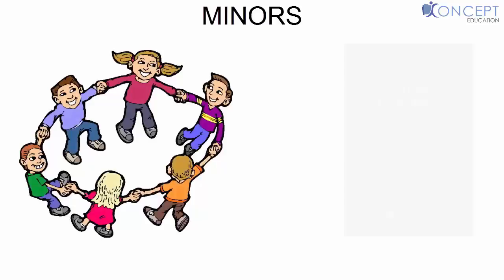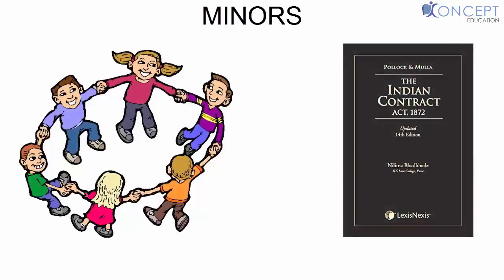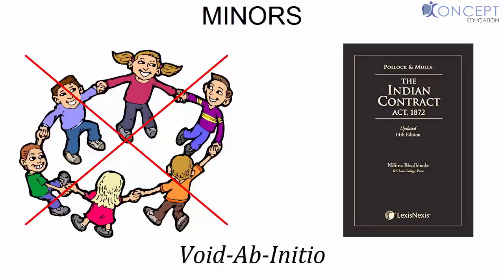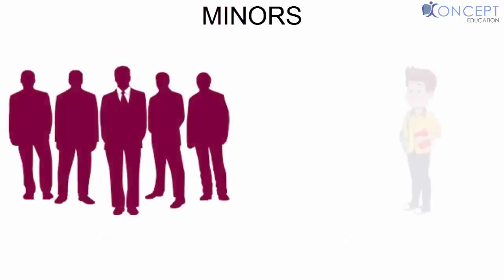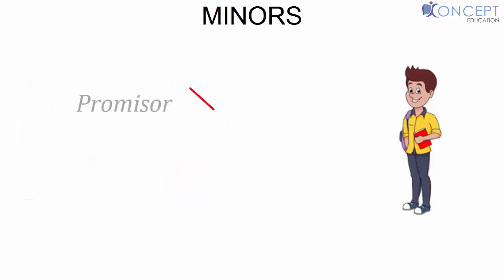Let's dive into the world of minors. The Indian Contract Act does not allow minors, as they are one of the three persons who cannot enter into a contract, and any contract with a minor is void ab initio — void from the very beginning. However, with the consent of all partners, a minor may be admitted to the benefits of the firm, based on the rule that a minor cannot be a promisor but can be a promisee or a beneficiary.